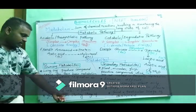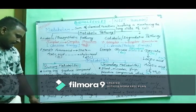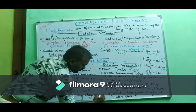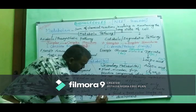Primary metabolites are found from the very starting stage of the plant's growth.